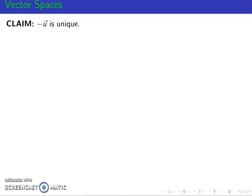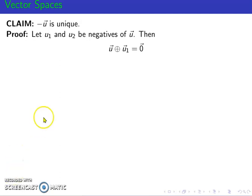The negative of a vector is also unique. So for the proof, let u1 and u2 be negatives of the vector u. Then vector u plus u1 is equal to 0, because by definition of a negative, if you add that to the vector u, the result is 0. And also, because u sub 2 is a negative of vector u, if you add that to the vector u, the result is the 0 vector.